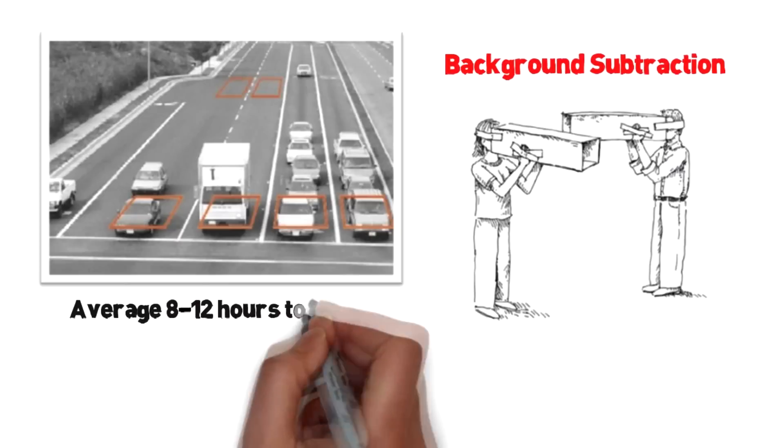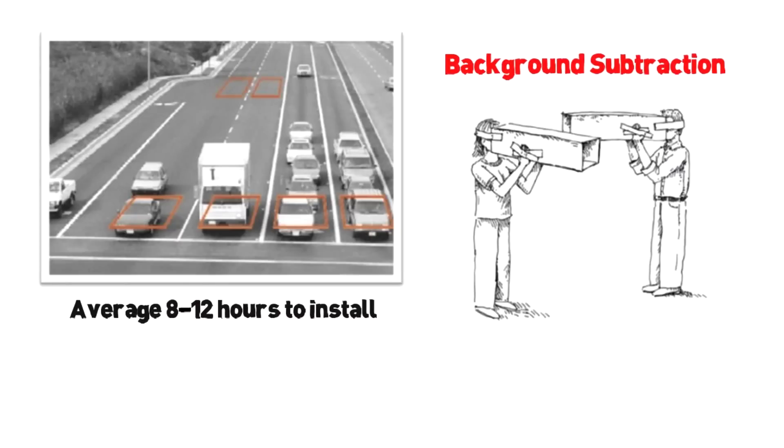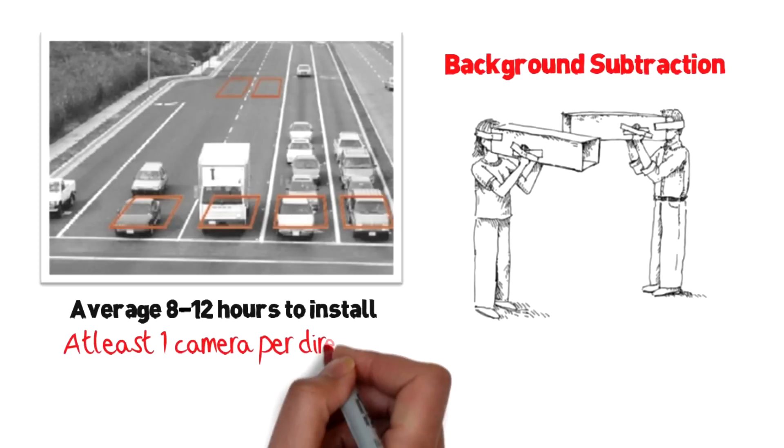With 8 to 12 hours and lane closures, the average system can be installed. Tripline moves away from loop breakage but requires at least one camera per direction.